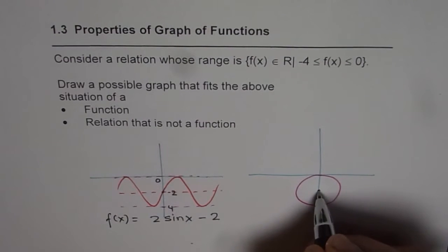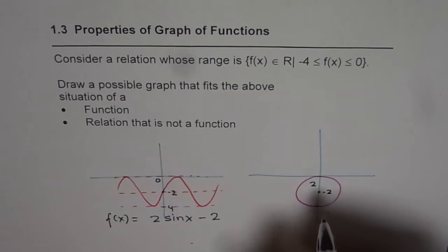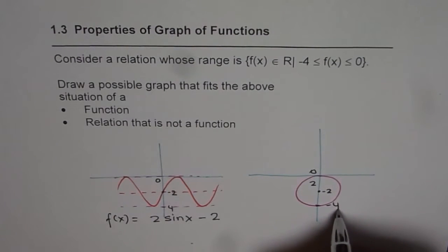Now if I have a circle with center so that the radius is let us say 2 units and center is at -2, y value, x value of 0. In that case, we will have maximum at 0 and minimum at -4.